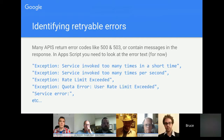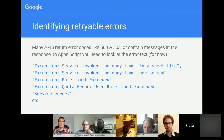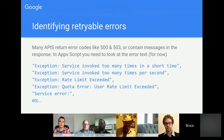You also have to identify whether an error is worth retrying. Each API has a different way of indicating a rate limit failure — external APIs might return error codes like 500 or 503, and sometimes they don't fail but instead include a message in the response. In Apps Script, you have to examine the text returned. There are about 20 error messages that are worth retrying.